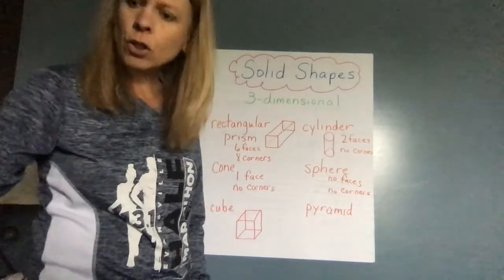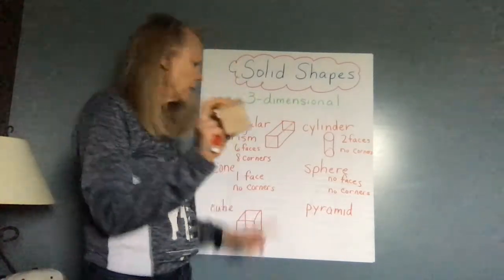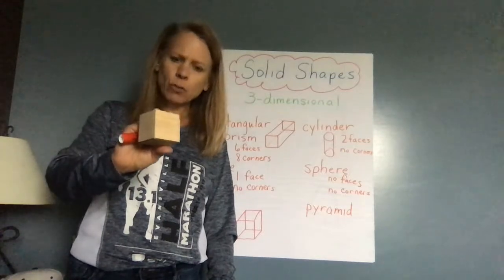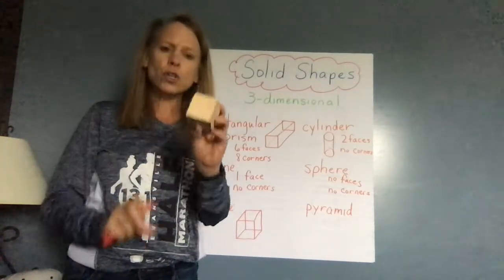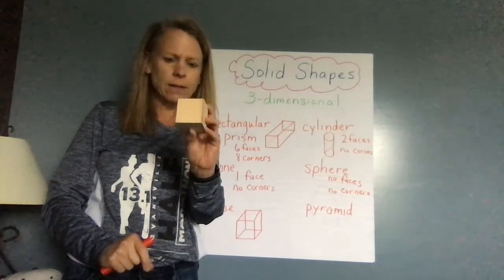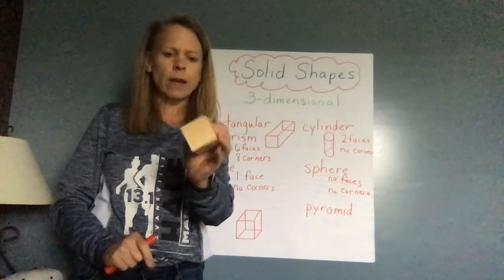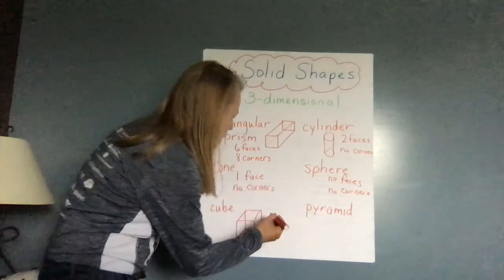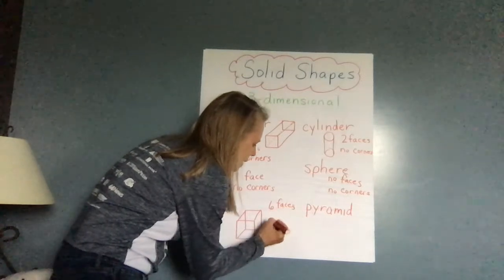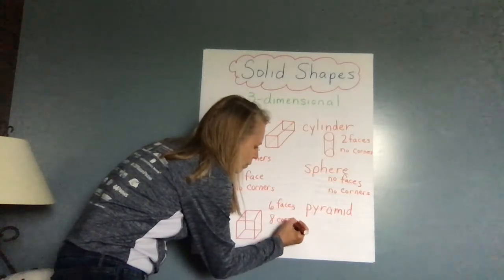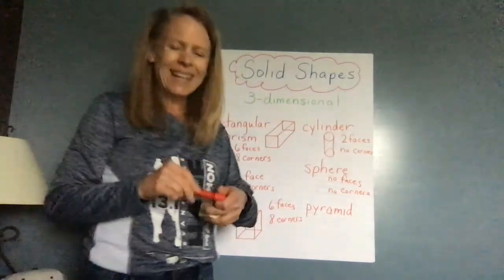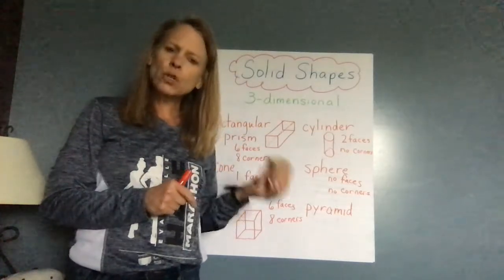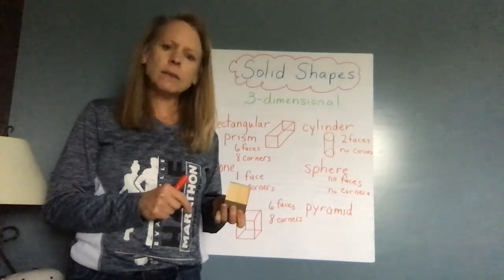Our next one is a cube. A cube and a rectangular prism are somewhat the same. The difference of a cube is all of the spaces are squares. It has six faces and all of the faces are squares, every single one of them. So that's how it's different than a rectangular prism. It has six faces and eight corners. Remember with our square from yesterday that all the sides of the square are the same.